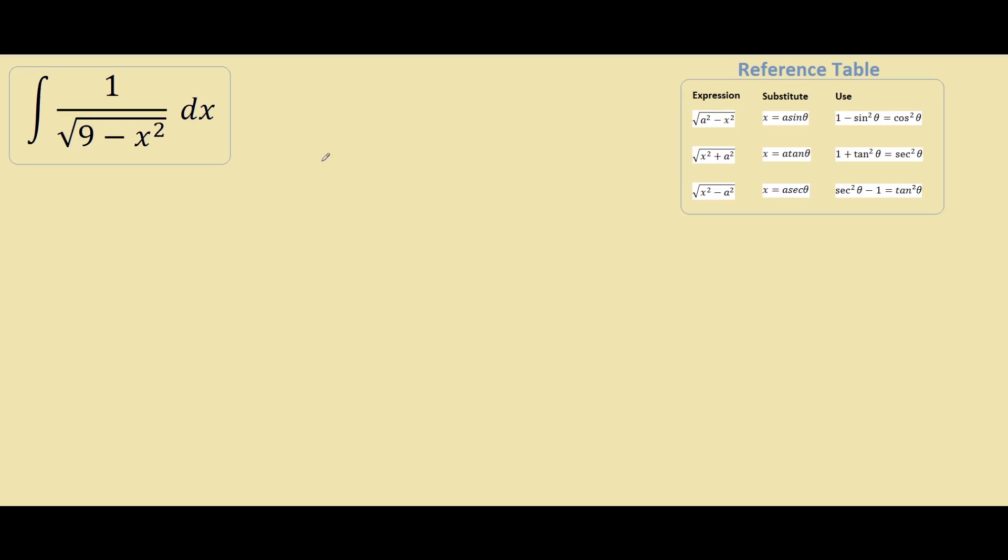I would say the trickiest part of this integral is knowing what to substitute into it. At first you might try 9 minus x squared as a u substitution, but as you'll soon find out, the integral is very difficult to solve.